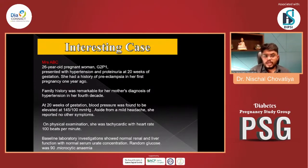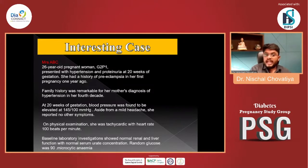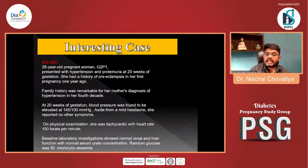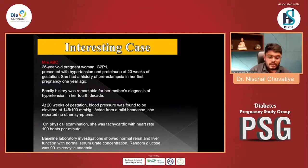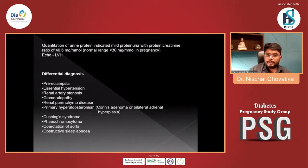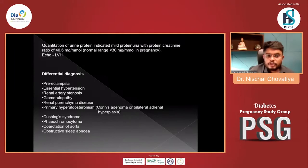An interesting case from two years ago: a 26-year-old pregnant female, G2P1, presented with hypertension and proteinuria at 20 weeks of gestation. She had a history of preeclampsia in the first pregnancy; family history was notable for maternal hypertension in her fourth decade. Blood pressure was 146/100. Aside from mild headache, no other symptoms. Physical examination showed tachycardia at 100 beats per minute. Baseline labs: liver and renal function normal, blood glucose 90, microcytic anemia. Urinary protein-creatinine ratio was 40 mg/mmol; echo suggested LVH.